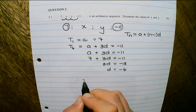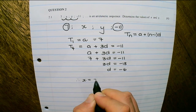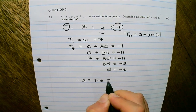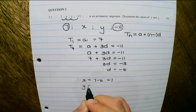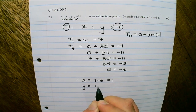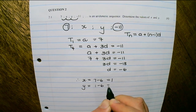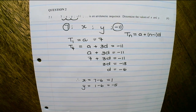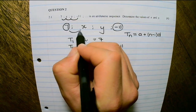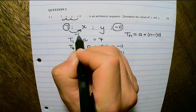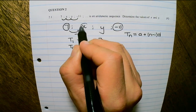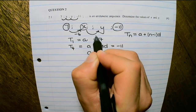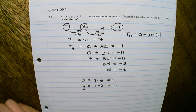Therefore x would be 7 minus 6, which is 1. And y would be 1 minus 6, which equals negative 5. I simply subtract 6 to get the x value, and then from that value subtract another 6 to get the y value.